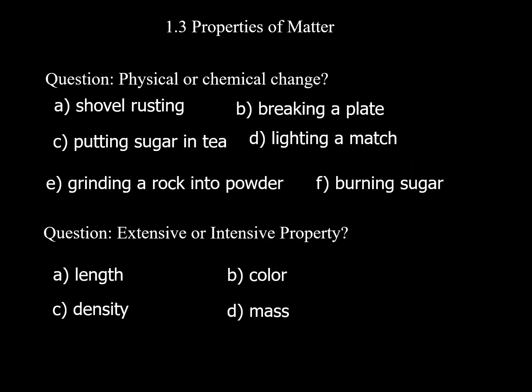Physical or chemical change examples: A shovel rusting is a chemical change — you can never get back the original shovel. Breaking a plate is a physical change — you can glue things back together. Putting sugar in tea is a physical change — you can get back the sugar and tea through distillation. Lighting a match is a chemical change — you'll never get that match back once lit. Grinding a rock to powder is a physical change. Burning sugar is a chemical change — you'll never get back the original sugar.